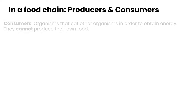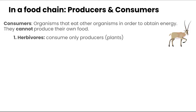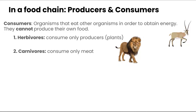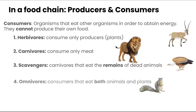Consumers are organisms that eat other organisms in order to obtain energy — they cannot produce their own food. There are several types: herbivores, which only consume producers or plants, like an antelope; carnivores, which consume only meat, like a lion; scavengers, which are carnivores that eat the remains of dead animals, like a vulture; and omnivores, which eat both animals and plants, like a squirrel.